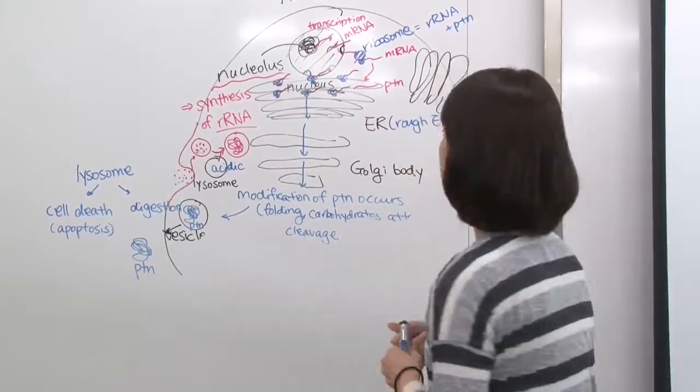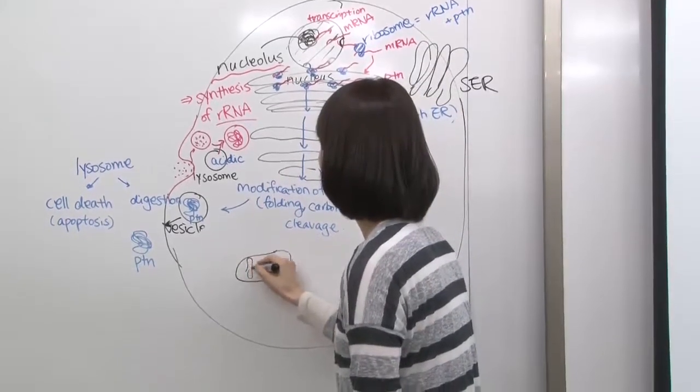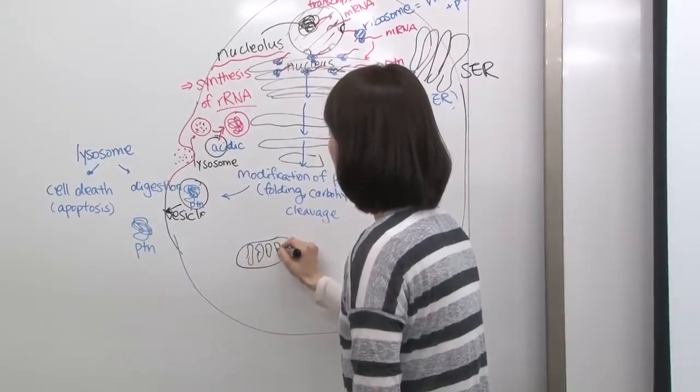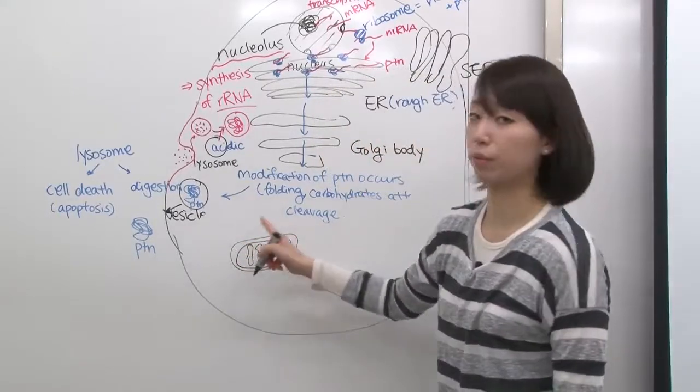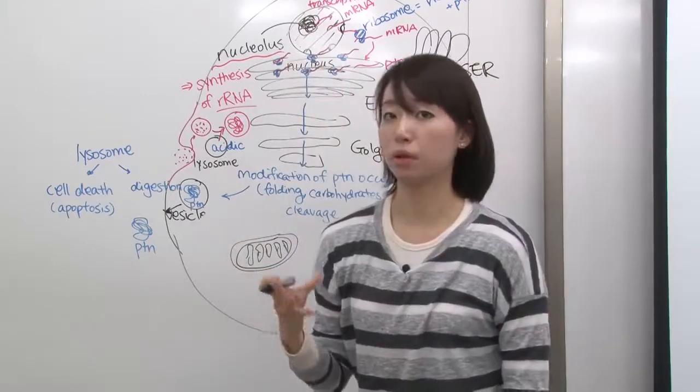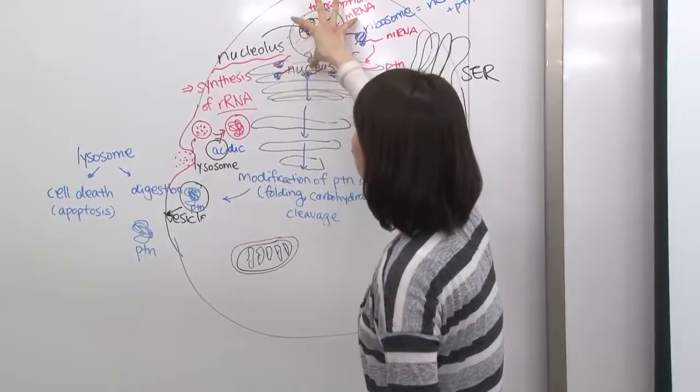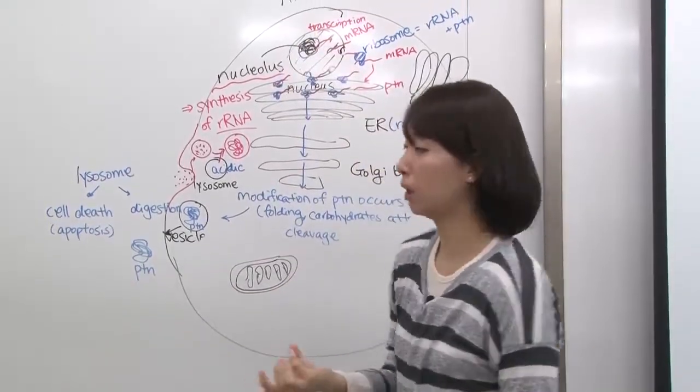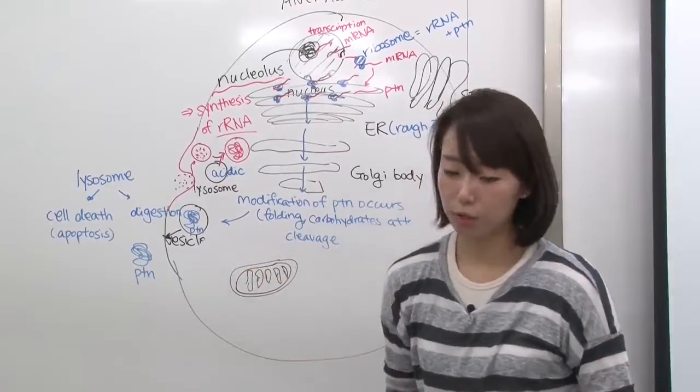Other than the endomembrane system, we have mitochondria. Mitochondria has a double membrane structure. Remember, the nucleus was a double membrane as well - the nuclear envelope that wraps around the nucleus is double membrane. Mitochondria also has a double membrane structure.